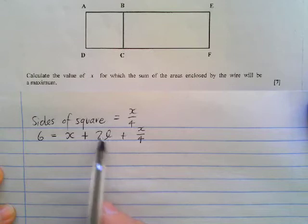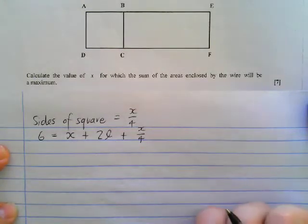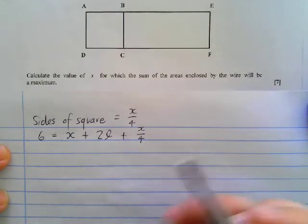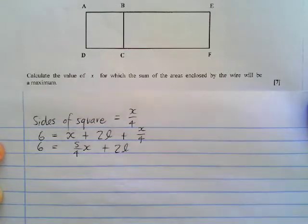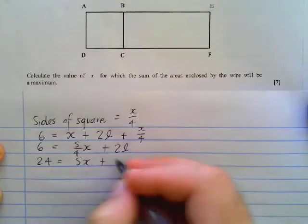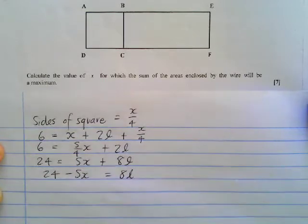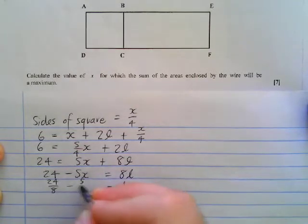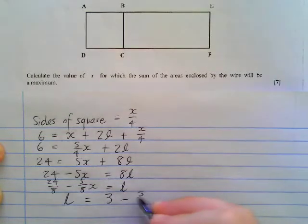So just to simplify this now, we could write L as the subject of the formula, because later on we could substitute that in when we're working with the areas. So if I want to make L the subject of the formula, remember that is 1X and that is a quarter X, so together that's going to be 5 over 4X. So 6 is equal to 5 over 4X plus 2L. If I times everything at this stage by 4, I could to get rid of that 4 over there, and I'd get 24 is equal to 5X plus 8L. Then I'm going to go 24 minus 5X is equal to 8L. And the last step would be to write L as the subject of the formula, so it's going to become 24 over 8 minus 5 over 8X.